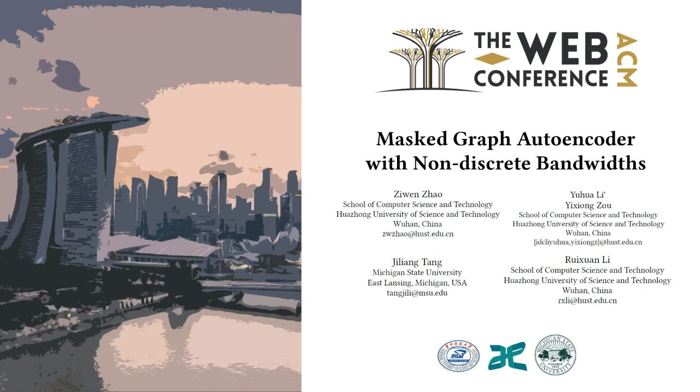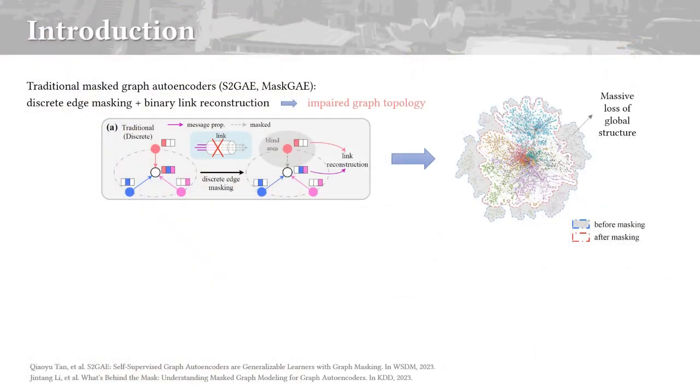Hello everyone. We're sharing the paper titled Masked Graph Autoencoder with Non-Discrete Bandwidths. Now we begin with the introduction of Masked Graph Autoencoders. It's a new type of graph self-supervised learning framework which resorts to discrete random edge masks and binary link reconstruction.